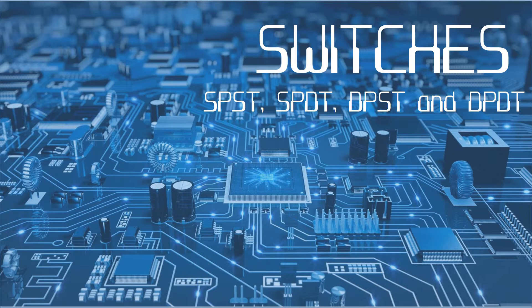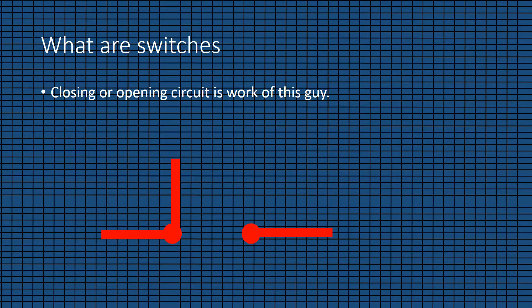Before starting with the SPST switch, let's learn what switches are. What are switches? We all know that a switch just closes the circuit and opens the circuit. But what is the meaning of a closed circuit and an open circuit? A closed circuit is when the circuit allows the flow of current, and when the circuit doesn't allow the flow of current, it is an open circuit. As you can see here, when the switch is not in the on condition it is an open circuit, whereas if the switch is in the on condition it is a closed circuit.